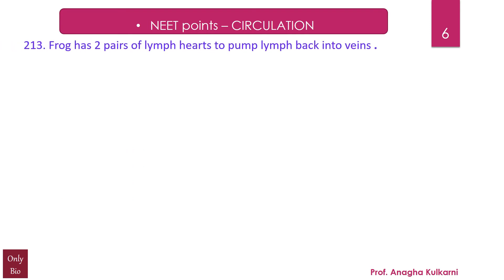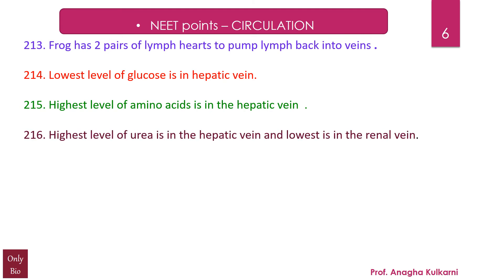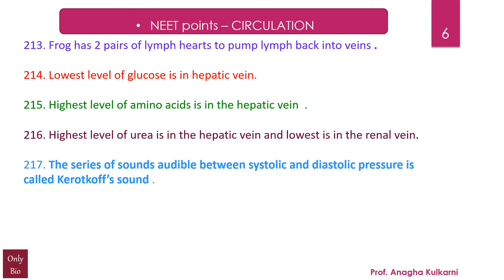Point number 213: Frog has two pairs of lymph hearts to pump the lymph back into veins. The lowest level of glucose is in the hepatic vein. The highest level of amino acids is in the hepatic vein. The highest level of urea is in the hepatic vein and lowest is in the renal vein. The series of sounds audible between systolic and diastolic pressure is called Korotkoff's sound.